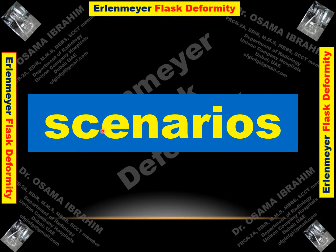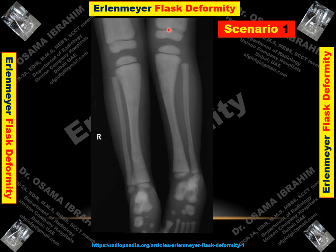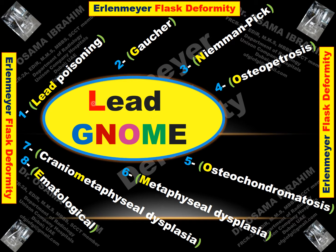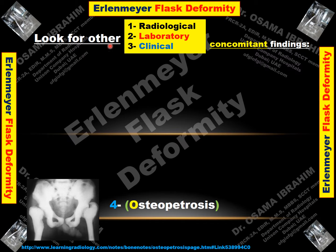Now we start with some scenarios to discriminate and understand the differential diagnosis. Scenario one: this frontal radiograph of the leg is showing Erlenmeyer flask deformity — broadening and widening of the metaphysis with narrowing and constriction of the diaphysis. The second step: we should know what pathologies or diseases can cause this deformity, remembering the LEAD GENOME mnemonic. Then we look for other radiological, laboratory, or clinical concomitant findings.